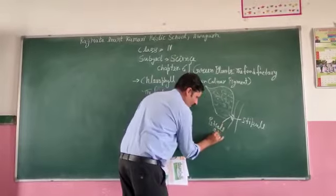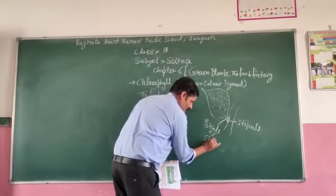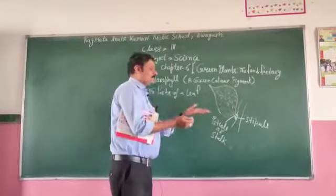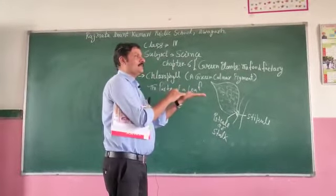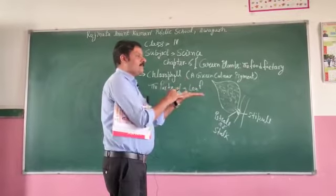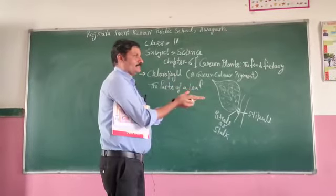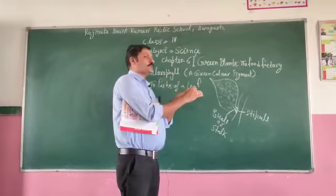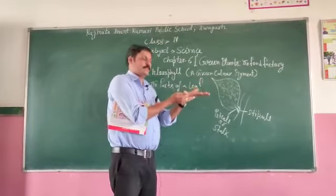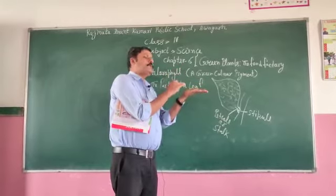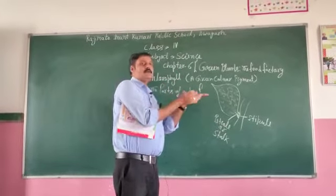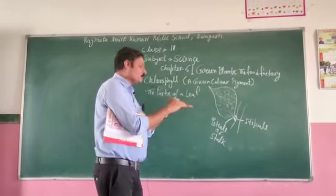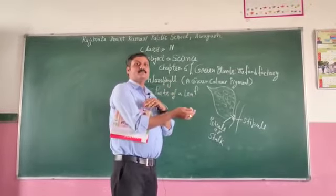The flat, broad part of the leaf is called the leaf lamina. The upper part of the leaf has a smooth surface, while the lower part has a rough surface. Leaf ka uperi hissa chikna hota hai aur neecha rough hota hai.